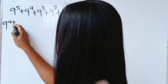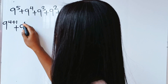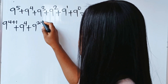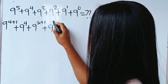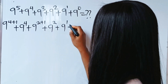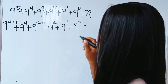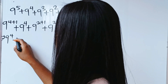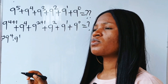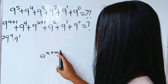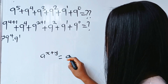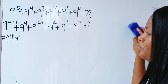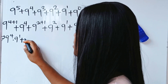9 raised to the power of 4 plus 1. Plus 9 raised to the power of 4. And 9 to the power of 3 can be written as 9 raised to the power of 2 plus 1, plus 9 raised to the power of 2, plus 9 to the power of 1, plus 9 to the power of 0. Now this equals 9 to the power of 4 multiplied by 9 to the power of 1, because when you have a to the power of x plus y, this is the same as a to the power of x multiplied by a to the power of y, using our law of exponents.